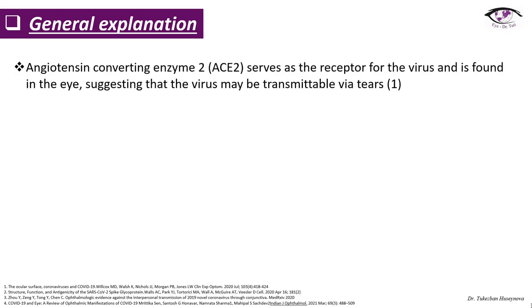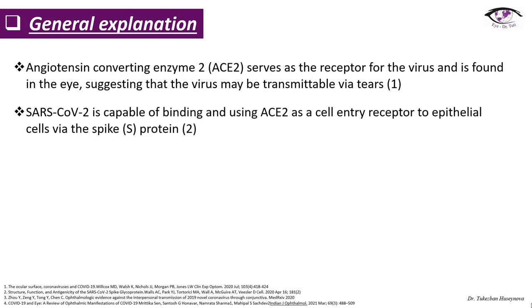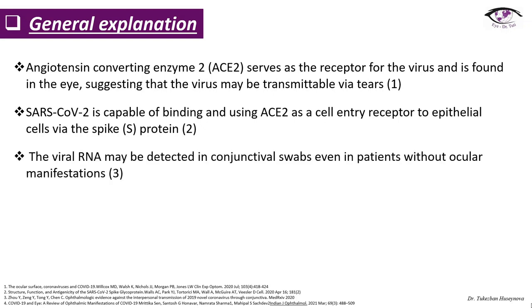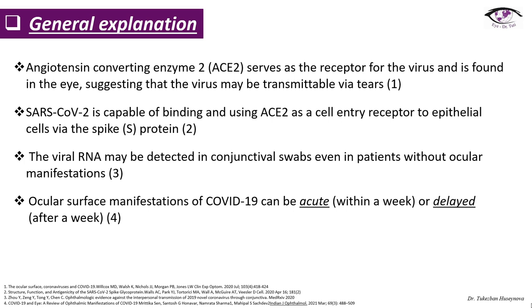Why the eye? Angiotensin converting enzyme 2 serves as the receptor for the virus and is found in the eye, suggesting that the virus may be transmittable via tears. SARS-CoV-2 is capable of binding and using ACE2 as a cell entry receptor to epithelial cells via the spike protein. The viral RNA may be detected in conjunctival swabs even in patients without ocular manifestations, and ocular surface manifestations can be acute within a week or delayed after a week of COVID-19 infection.